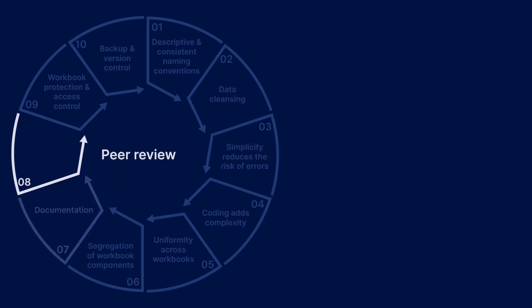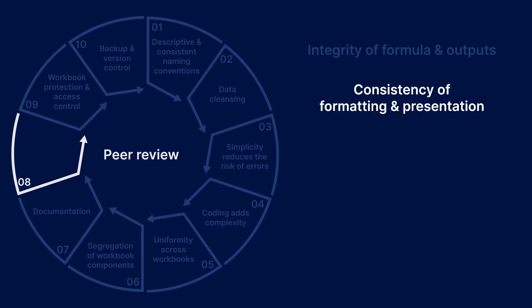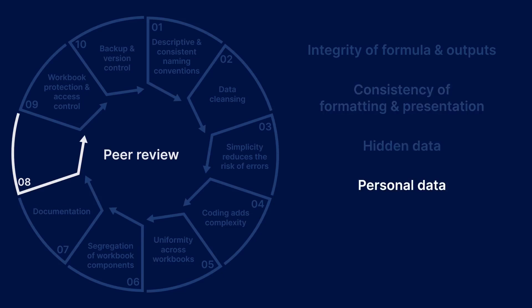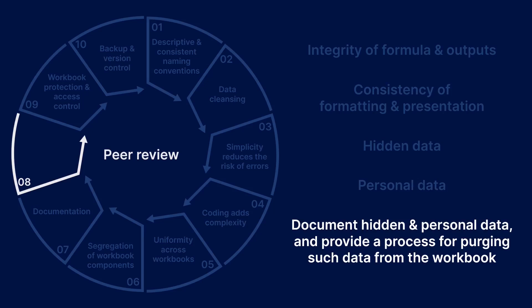The previous steps will make a workbook easier to audit. So Step 8 is a peer review of a workbook and its embedded code. A review should check for the integrity of formulas and results throughout the workbook, consistency of formatting and presentation, any hidden data in the workbook, and any personal data. Whilst hidden and personal data may be needed for the workbook to function correctly, they should be noted in the documentation, along with a process for purging such data before distributing the workbook. This process could be as simple as hard-coding all output reports in a backup copy before deleting all other sheets.